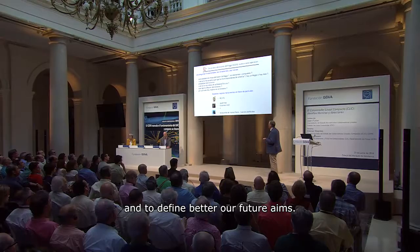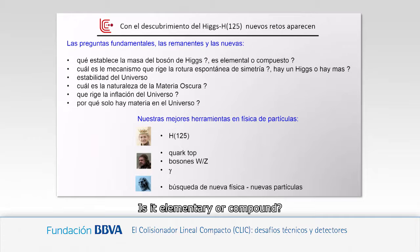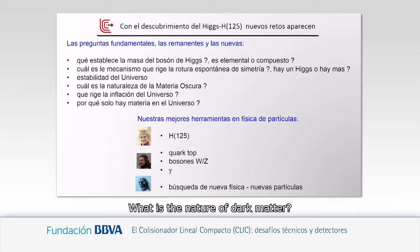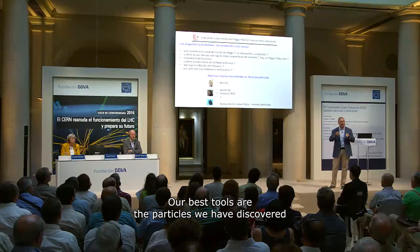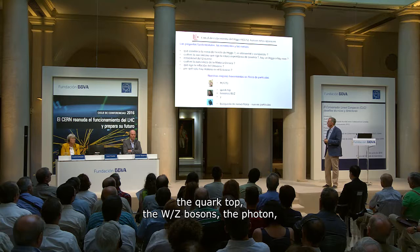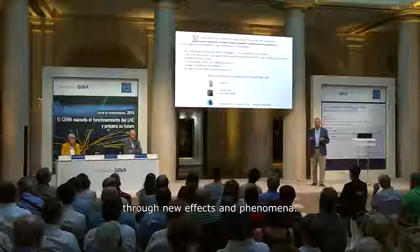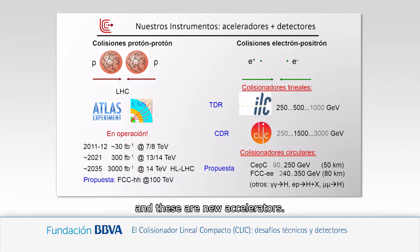Our fundamental questions for the next years in particle physics are: Is the Higgs elementary or composite? What is the mechanism of Higgs symmetry breaking? What is the stability of the universe? What is the nature of dark matter? What is cosmic inflation? And why is there only matter in the universe? The best tools we have are the particles themselves — the Higgs, the top quark, the W, Z, and photon — and the direct search for new physics through new phenomena.